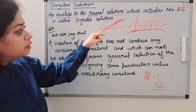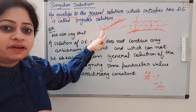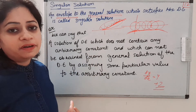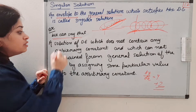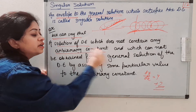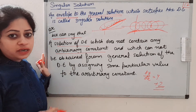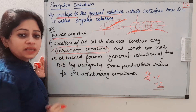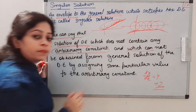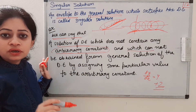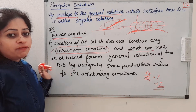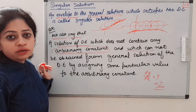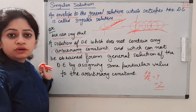That envelope is the singular solution, and the method of finding the envelope and the method of finding the singular solution are the same. We can say a solution of a differential equation does not contain any arbitrary constants — unlike the general solution which has arbitrary constants, the singular solution does not. And it cannot be obtained by assigning particular values to those arbitrary constants, which would give a particular solution.